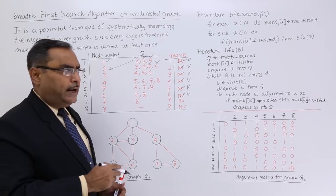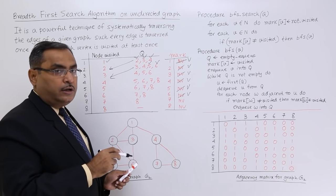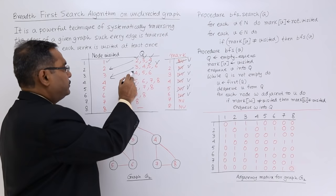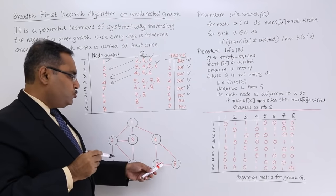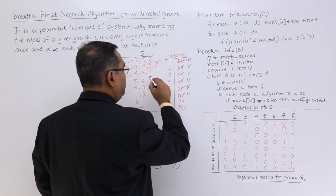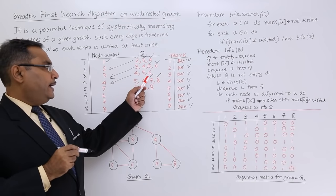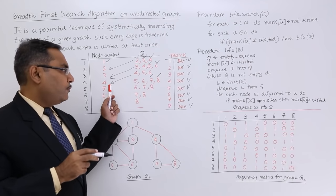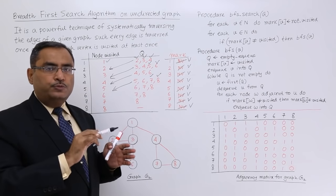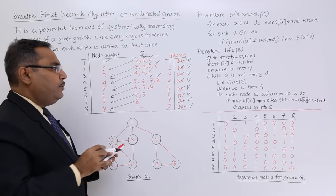The process continues: 3 comes out but all its adjacent nodes are already visited, so nothing is enqueued. Then 4 comes out, and node 4 has two other nodes 7 and 8 that are not visited in the mark array. So 7 is inserted and marked visited, 8 is inserted and marked visited. Then 5, 6, 7, and 8 come out with no pending unvisited nodes, and Q becomes empty.